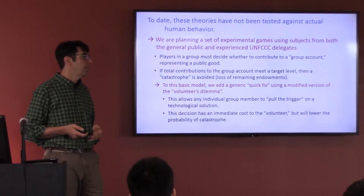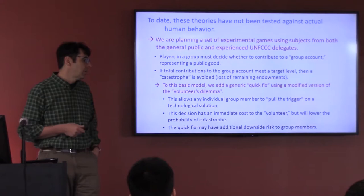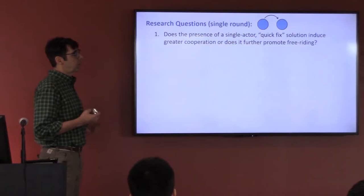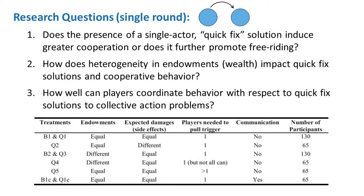This decision has an immediate cost to the volunteer but lowers the probability of catastrophe. We could also explore whether there are additional downside risks to other group members — side effects of geoengineering. We plan to do this as a single round, exploring: does the presence of a single-actor quick fix solution induce greater cooperation among everybody? Does the threat of someone implementing this induce greater cooperation, or does it further promote free riding — waiting for the volunteer? How does heterogeneity, especially in endowments, impact quick fix solutions and cooperative behavior?